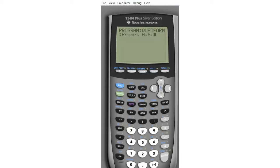Now click on Enter again to move to the next line. This is where we'll input the equation. Let's input the formula negative b plus the square root of b squared minus 4ac all over 2a.